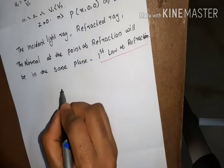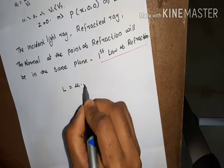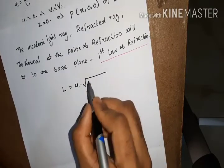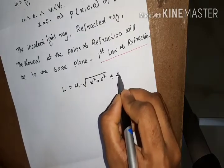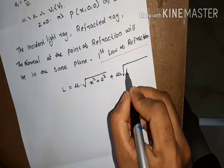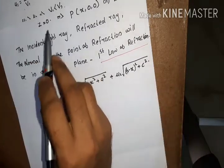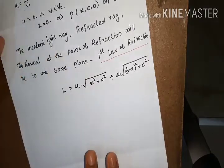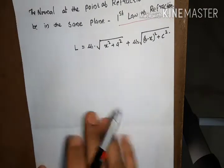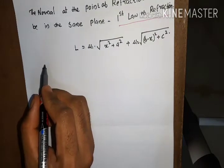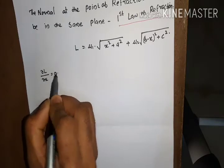Substituting z = 0, we can rewrite the optical path as L = mu1 times √(x² + a²) plus mu2 times √((b - x)² + c²). Now we apply the second minimization condition: ∂L/∂x = 0.